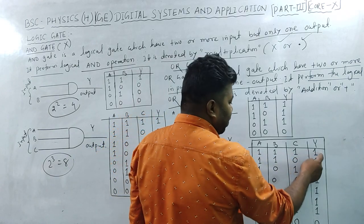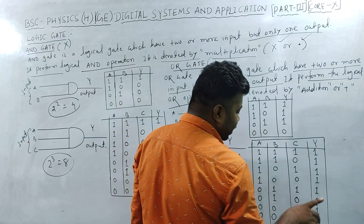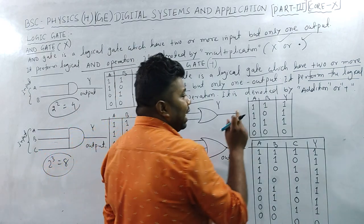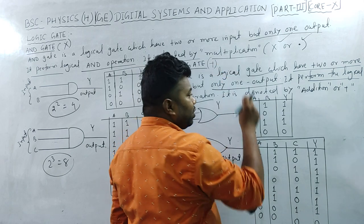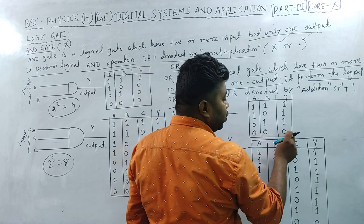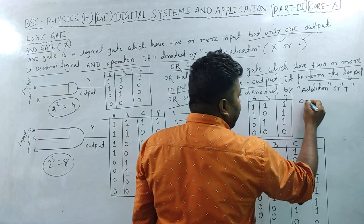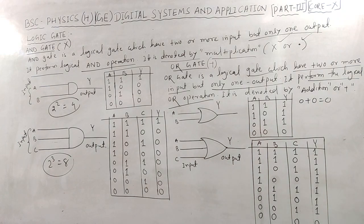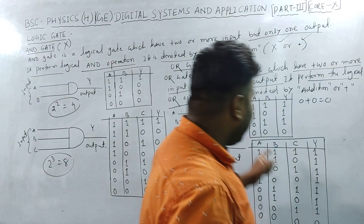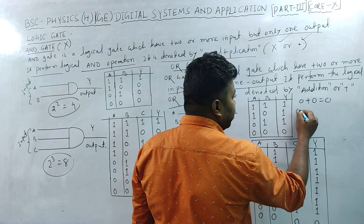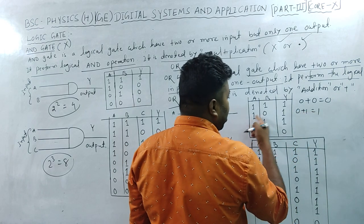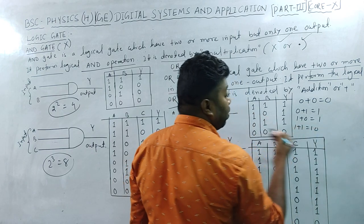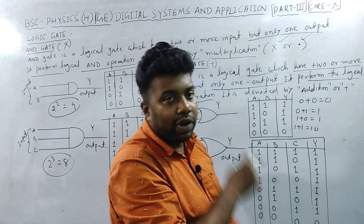For the OR gate truth table: 0 plus 0 = 0; 0 plus 1 = 1; 1 plus 0 = 1; 1 plus 1 = 1. The OR operation is like logical addition. If any input is 1, the output is 1. Only when all inputs are 0 is the output 0.